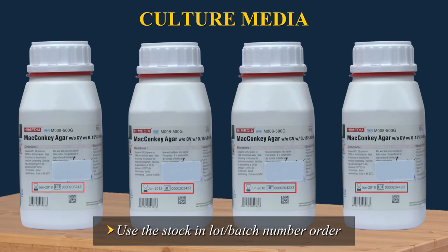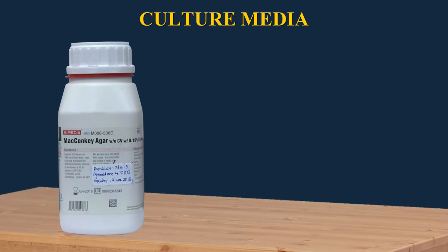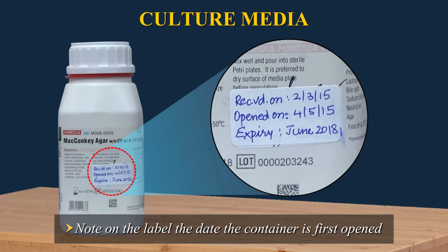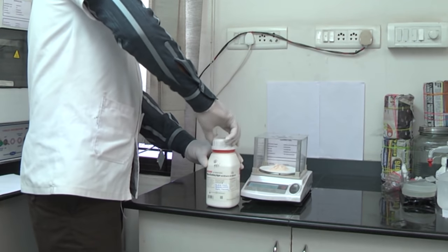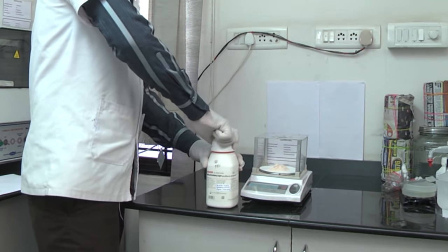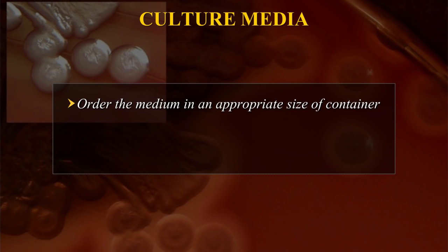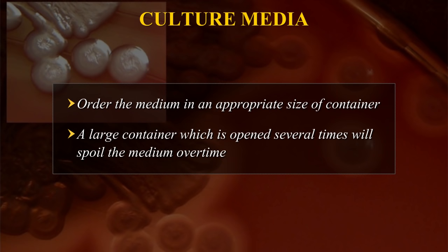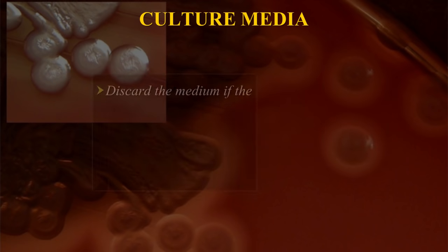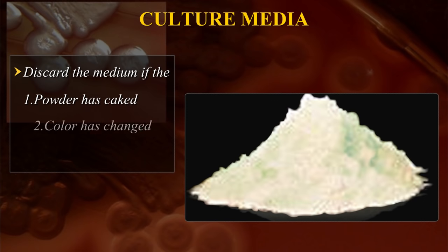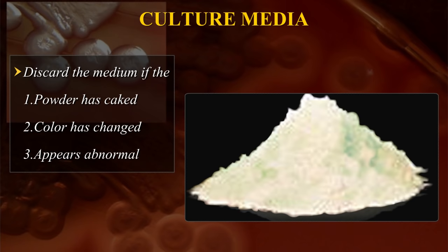Use your stock in lot batch number order — that is, the product with the earlier lot or batch number should be opened first. Do not open a new bottle until the previous bottle has been emptied. Note on the label the date the container is first opened. After use, make sure the container is tightly closed and return it to the designated storage area. Order the medium in an appropriate size of container according to the need of your laboratory. A large container which is opened several times will spoil the medium over time. Discard the medium if the powder has caked, if the colour has changed, or if it appears abnormal in any way.